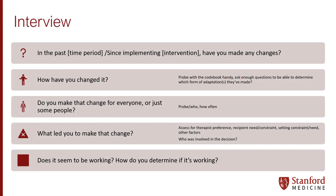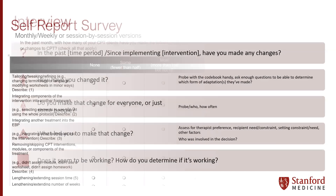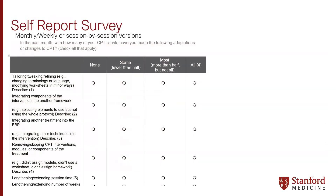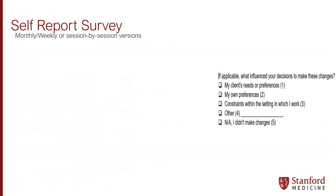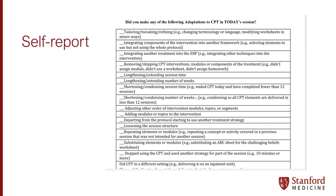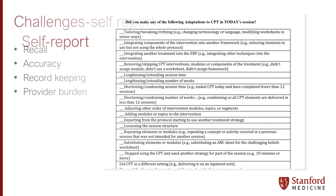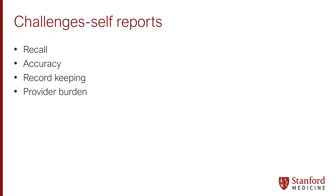There are a number of ways to assess adaptations and modifications. We can use an interview — these are samples from an interview guide. We tend to be broad and use the codebook to determine what people are saying about adaptations, probing until we understand how to code it. We also look for reasons and ask whether it seems to be working and how people know — are they actually collecting data, and what kind of feedback or response are they looking for? We've developed self-report surveys for content-level adaptations and questions about what influenced decisions to make changes, as well as self-reports at a session level for psychotherapies. There are challenges to self-reports, including recall, accuracy, description of the adaptation, record-keeping issues, and provider burden.